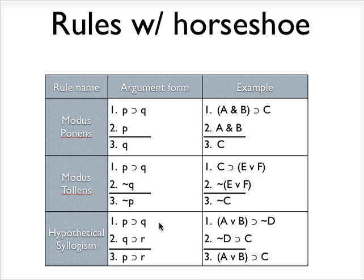The last rule concerning a horseshoe is called a hypothetical syllogism. And this is what the ancients sometimes called a chain argument. You can see why. If P, then Q. If Q, then R. Therefore, if P, then R. Right? So if I have a line of my proof that asserts this, and a line that asserts this, then I can assert this.